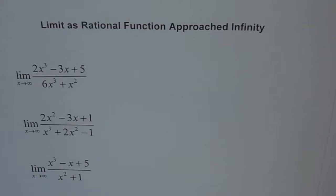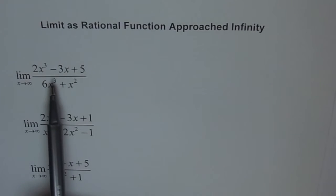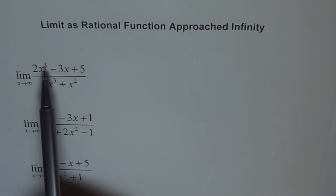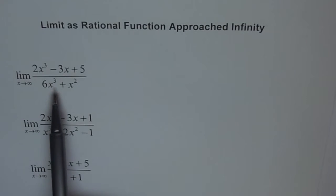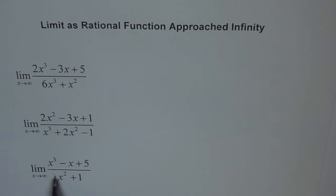Notice one thing as we go through the solutions: look at the degree of the numerator and denominator. A rational function is a ratio — a quotient of polynomials. The degree of the numerator here is 3 and the degree of the denominator is 3, so they have the same degree. In another case, the degree of the numerator is 2 and the degree of the denominator is 3. If n is the degree of the numerator and m is the degree of the denominator, here the degree of the denominator is higher, and in the last case the degree of the numerator is higher. That makes a huge difference in the limit of the function as it approaches infinity.